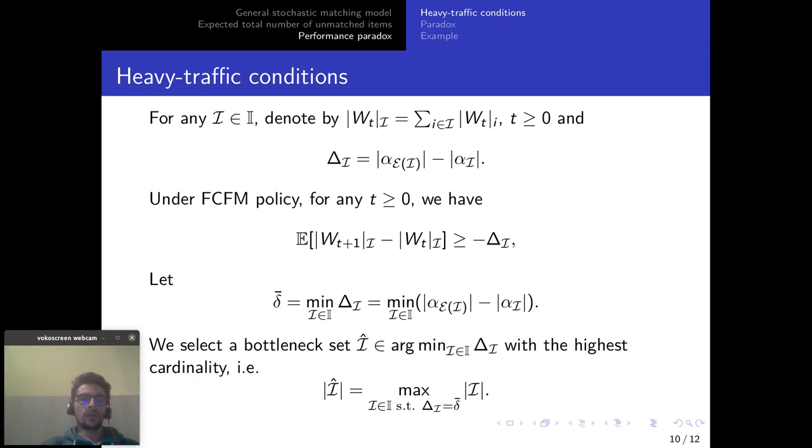We are going to define also delta bar which is the minimum over all minimal draining times of all independent sets. And we are going to select an independent set i hat which satisfy this mean but also that has the highest cardinality among all independent sets that satisfy this mean. And we are going to call it the bottleneck set.